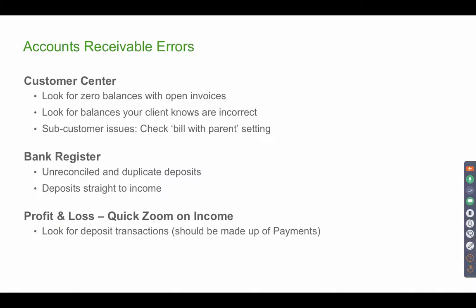For troubleshooting accounts receivable, first go to the Customer Center and look for clients that have zero balances with open invoices — try to apply those payments to the invoices. Look for balances that are negative or that look incorrect, higher or lower than normal, and audit those. Also make sure that if you have a sub-customer or job, check the 'Bill with Parent' checkbox so a customer can pay multiple jobs and payments can be applied to those sub-customers.